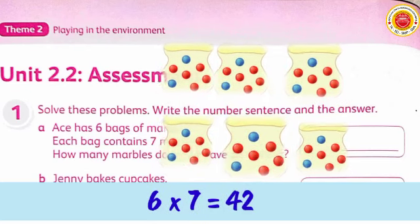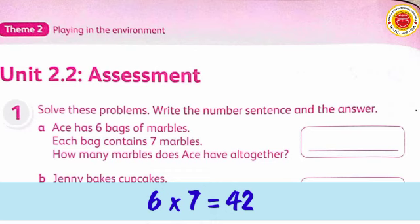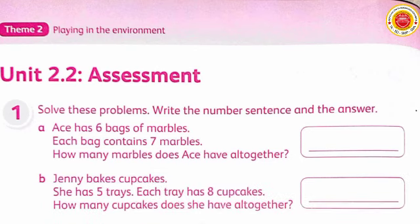Let me explain once more: Ace has 6 bags — Ms. has written the number 6 here. Then, each bag contains 7 marbles. So we multiply by 7 and the result is 42.